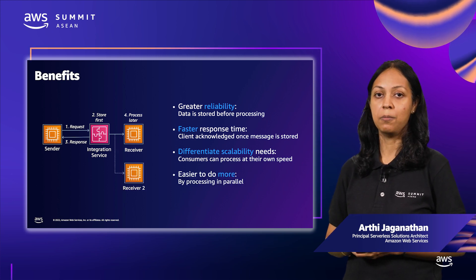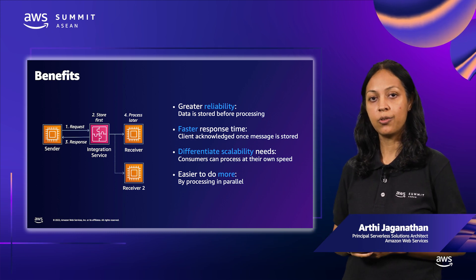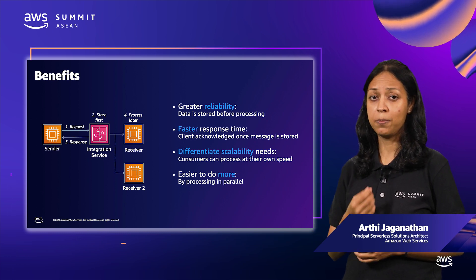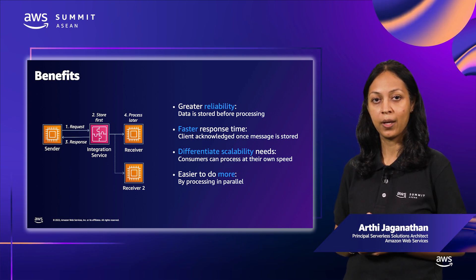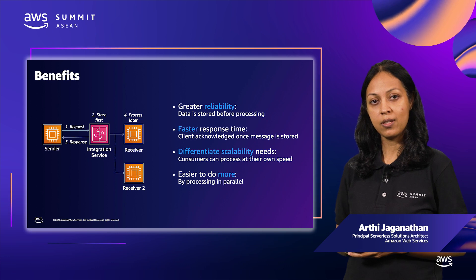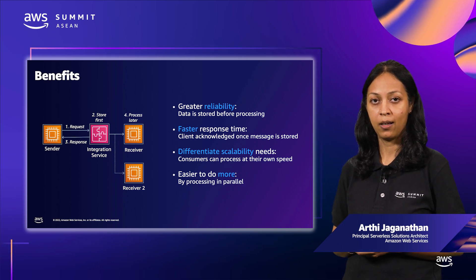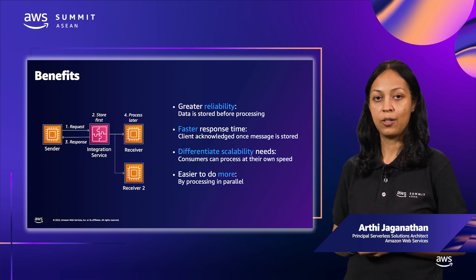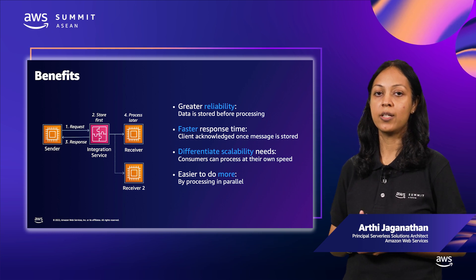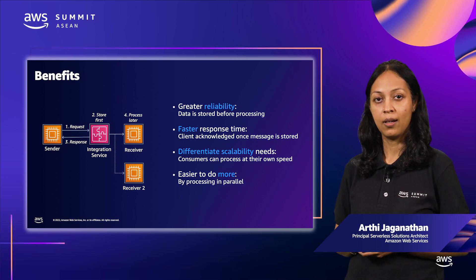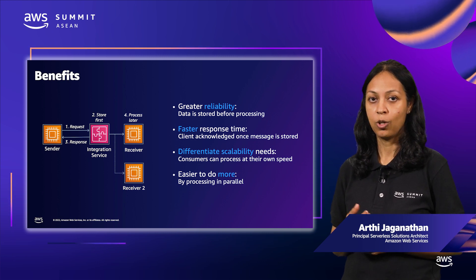Finally, this simplifies running processes in parallel. Continuing the retail example, an order placed will trigger fulfillment, invoicing, and probably forecasting workflows — all these microservices can kick off in parallel once the order is placed. Now that we've seen the benefits of asynchronous integration, Julia is going to walk you through how you can design this on AWS and will cover important design trade-offs you should consider. Over to you, Julia.